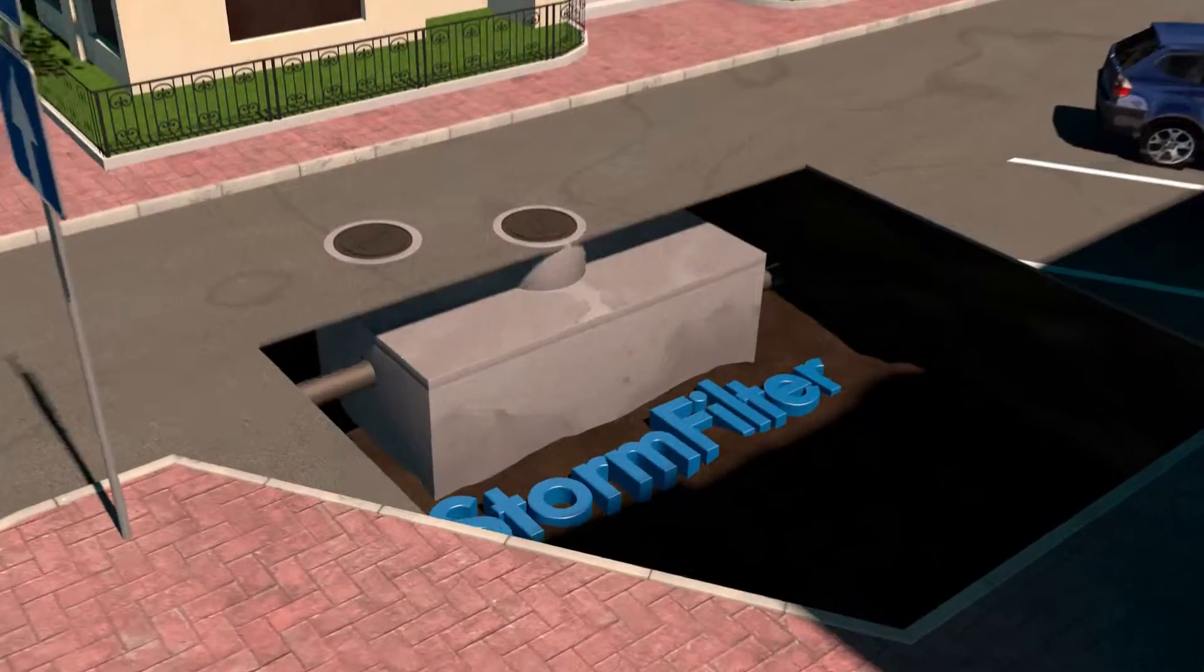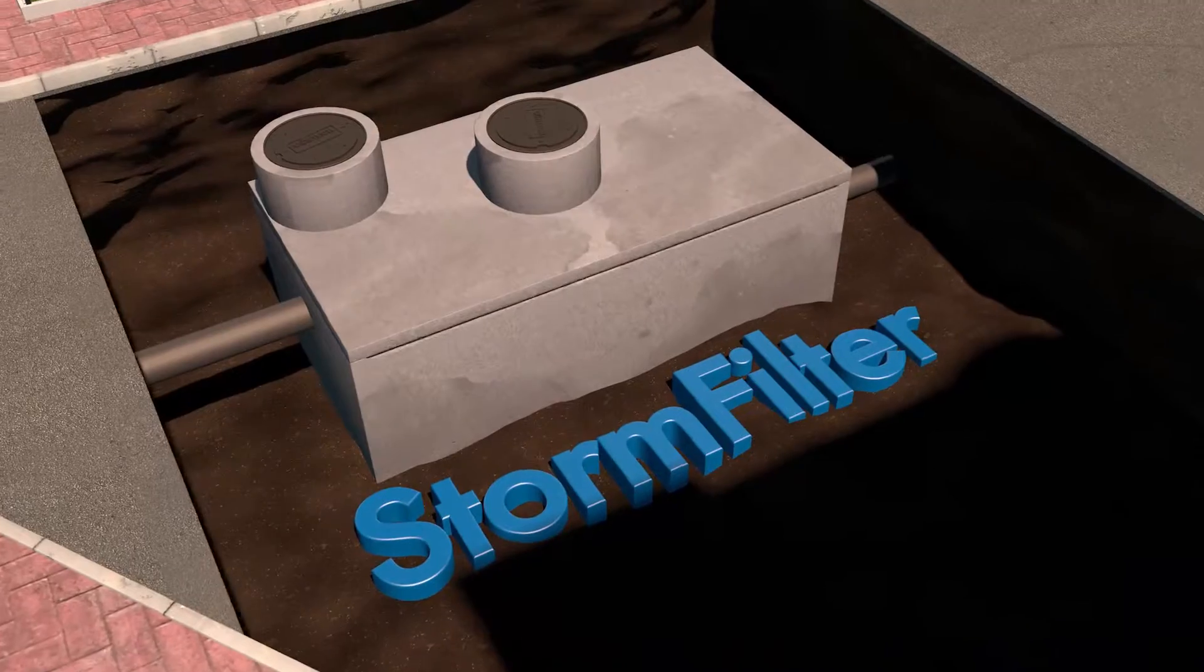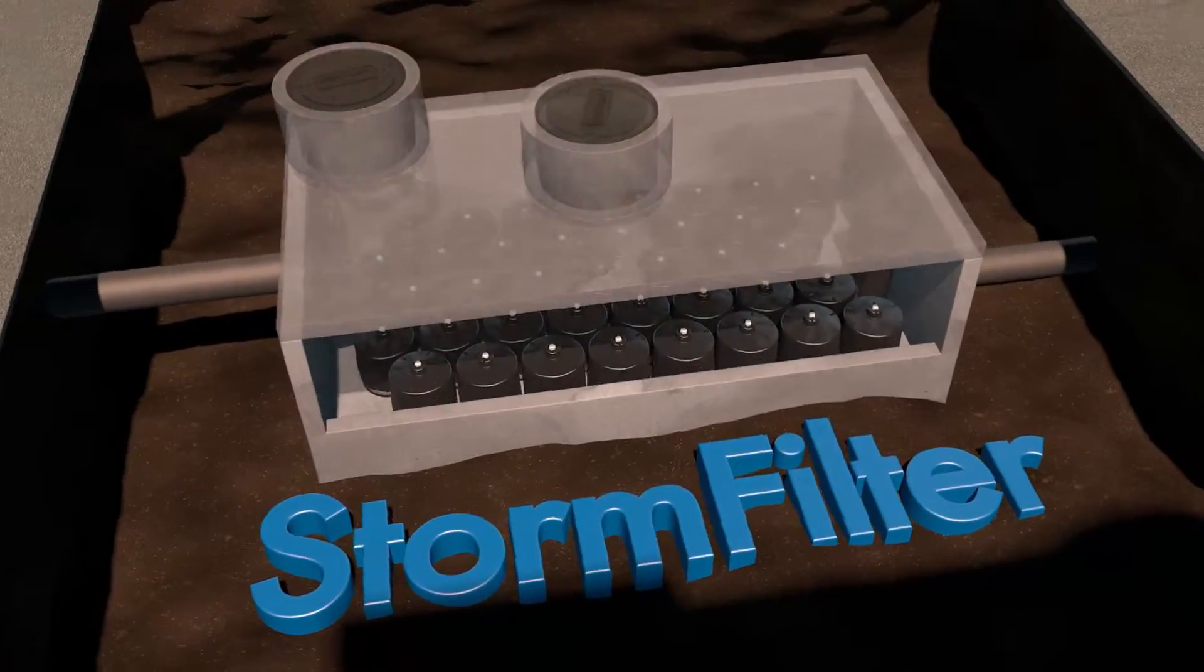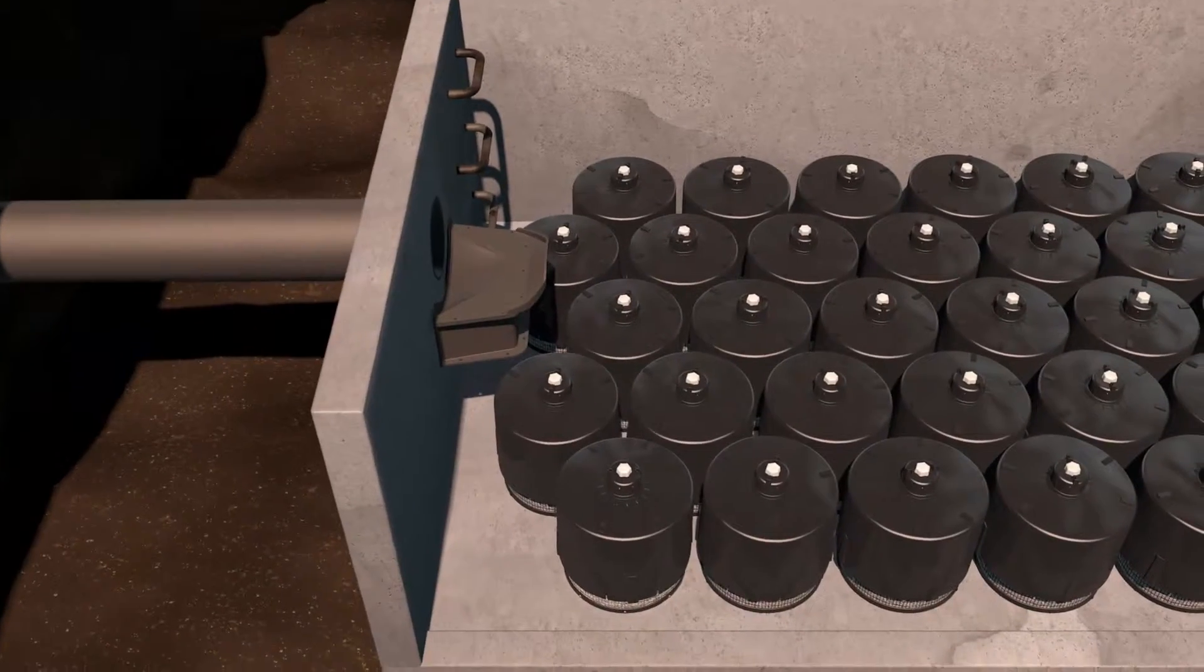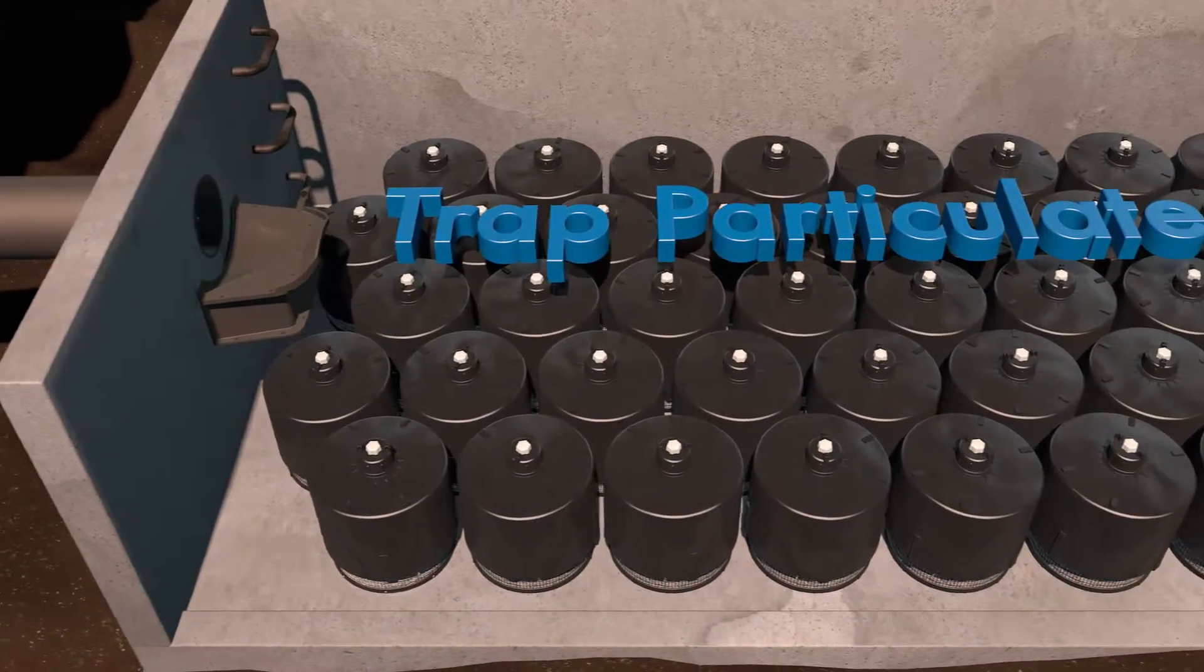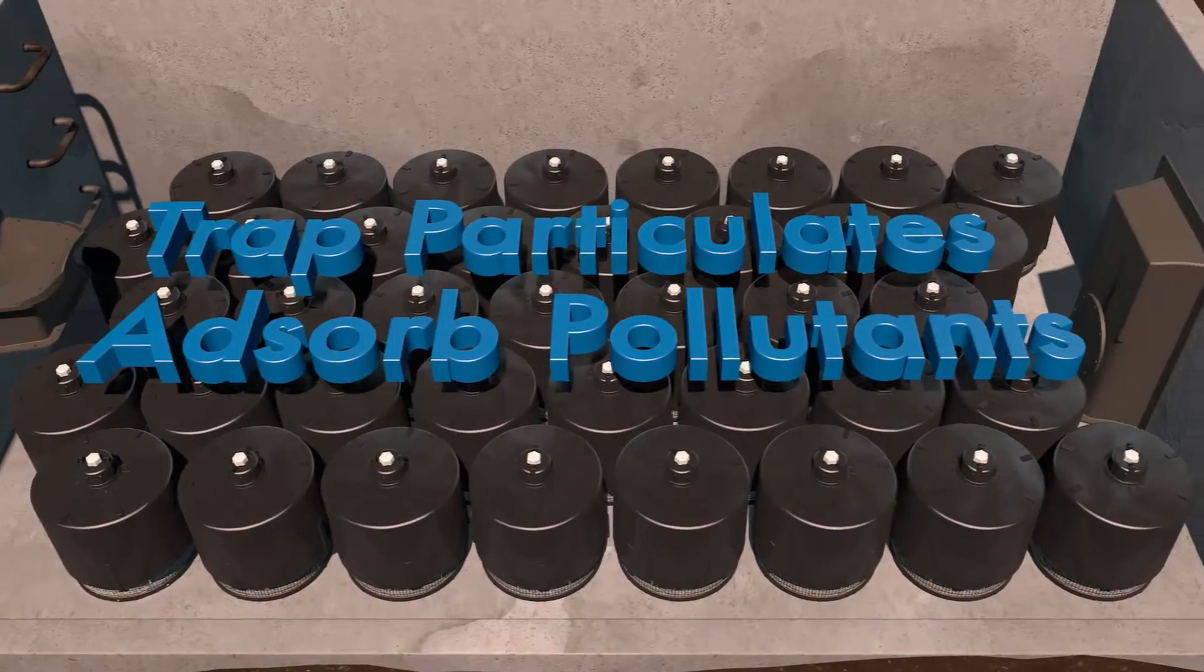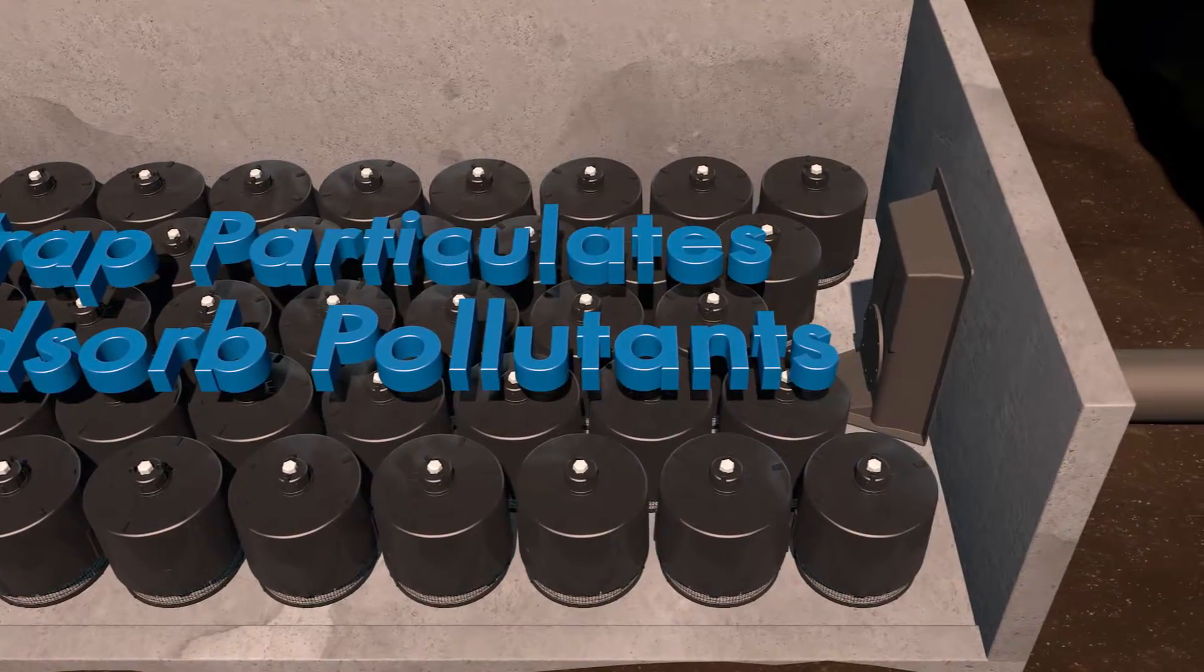To help meet these regulations, CONTEC developed the Stormwater Management Storm Filter, a stormwater treatment device comprised of one or more structures that house rechargeable, media-filled cartridges that trap particulates and absorb pollutants, such as dissolved metals, hydrocarbons, and nutrients.